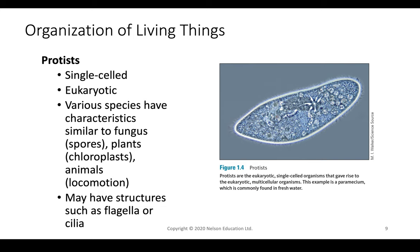Protists are also single-celled, but these are eukaryotic — a little bit more complex than our prokaryotic precursors. Several different species have multiple characteristics; they can have spores, chloroplasts, or the ability to move, similar to fungi, plants, and animals. Because they are eukaryotic, they have specific membrane-bound organelles including nuclei and compartmentalized spaces such as an endoplasmic reticulum for protein creation. They can also have specialty structures like flagella or cilia for locomotion — for example, the paramecium is covered in cilia on the outside.